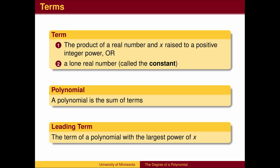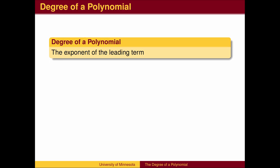The leading term is the term of a polynomial with the largest power of x. The degree of a polynomial is the exponent of the leading term. That is, the degree is the largest power on x in the polynomial.